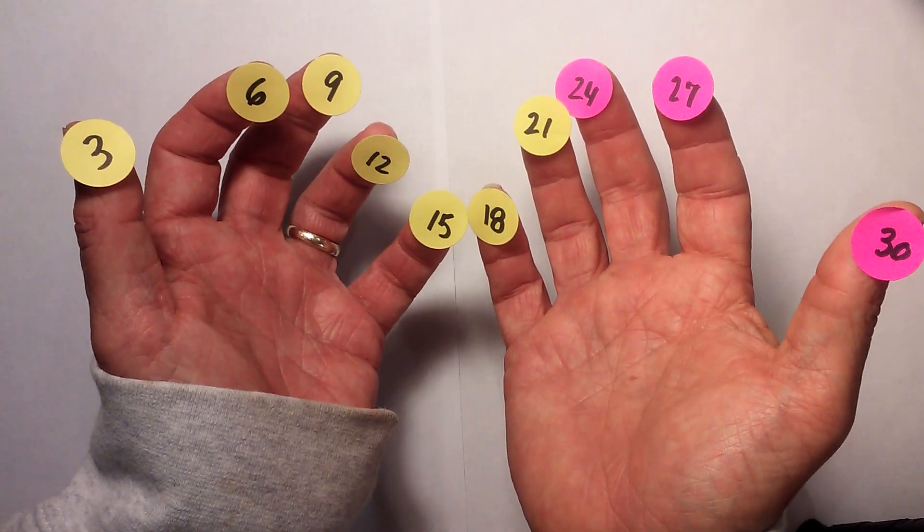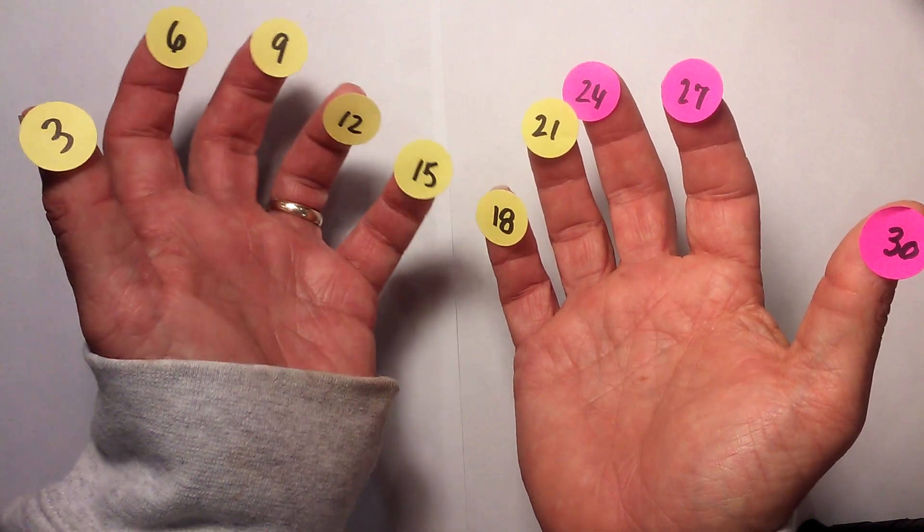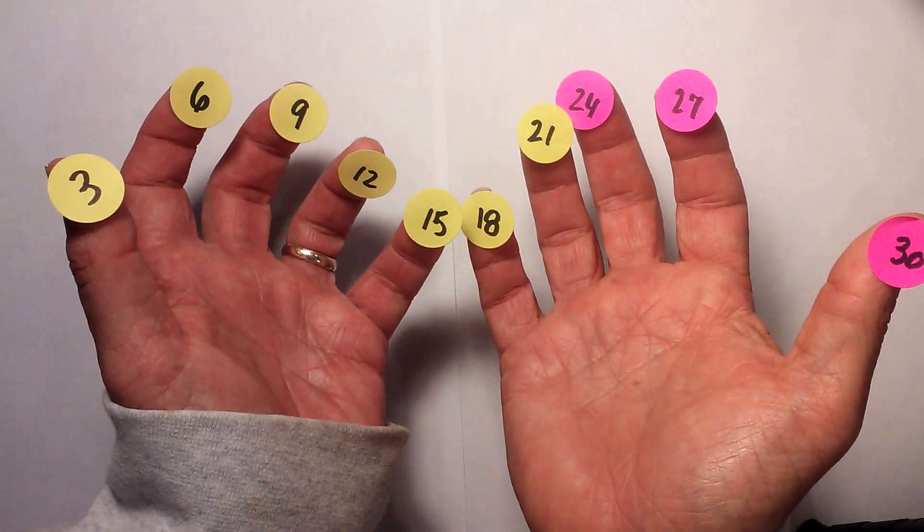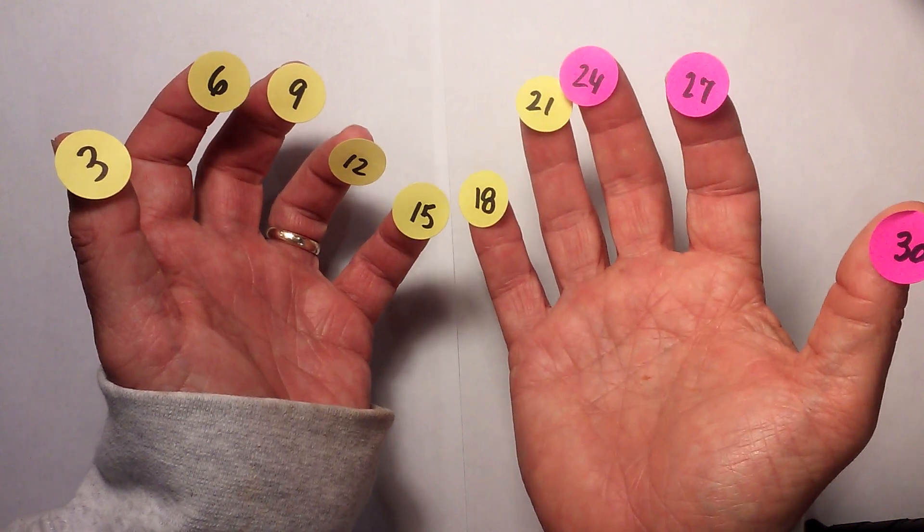But 3 is one where you have to kind of just memorize or just practice it. So it's 3, 6, 9, 12, 15, 18, 21, 24, 27, and 30.